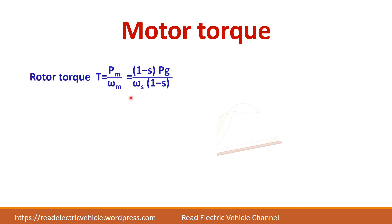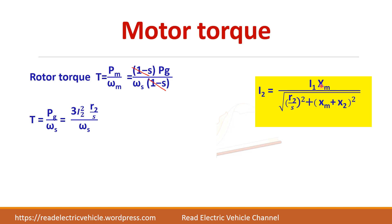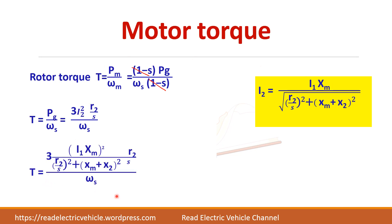Now we will calculate the motor torque. Motor torque equals mechanical power developed divided by the speed of the motor, i.e., Pm divided by ωm. Pm is (1 − S) times the air gap power Pg, and ωm is ωS times (1 − S). Cancelling these terms gives torque as Pg divided by ωS. Air gap power is 3 × I2² × (R2/S), so torque equals 3 × I2² × (R2/S) divided by ωS. We substitute the expression for I2 and simplify the torque equation.